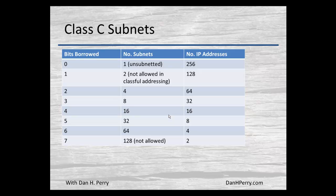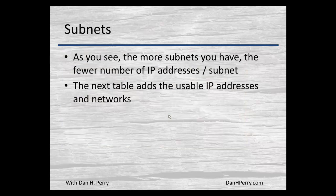If we were allowed to borrow a single bit — and in classful addressing we are not — that would give us 2 networks of 128 IP addresses each. Borrowing 2 bits gives 4 networks of 64, and continuing from there. If we could borrow 7 bits — though in a Class C the most we could actually borrow was 6 — it would give us 128 subnets, but only 2 IP addresses per subnet. The more subnets we have, the fewer IP addresses we have per subnet.